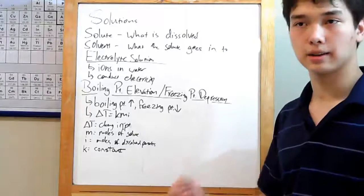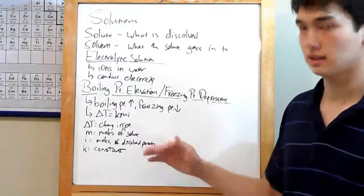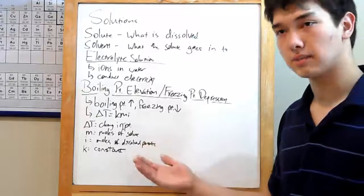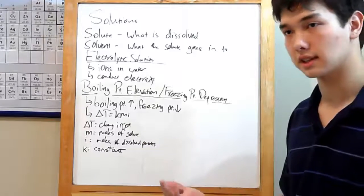Delta T is your change in either your boiling or freezing point. For boiling points, add delta T. For freezing points, subtract it. K is just a constant. It changes depending on what your solvent is. It'll be different from water and sucrose. You're generally given K.